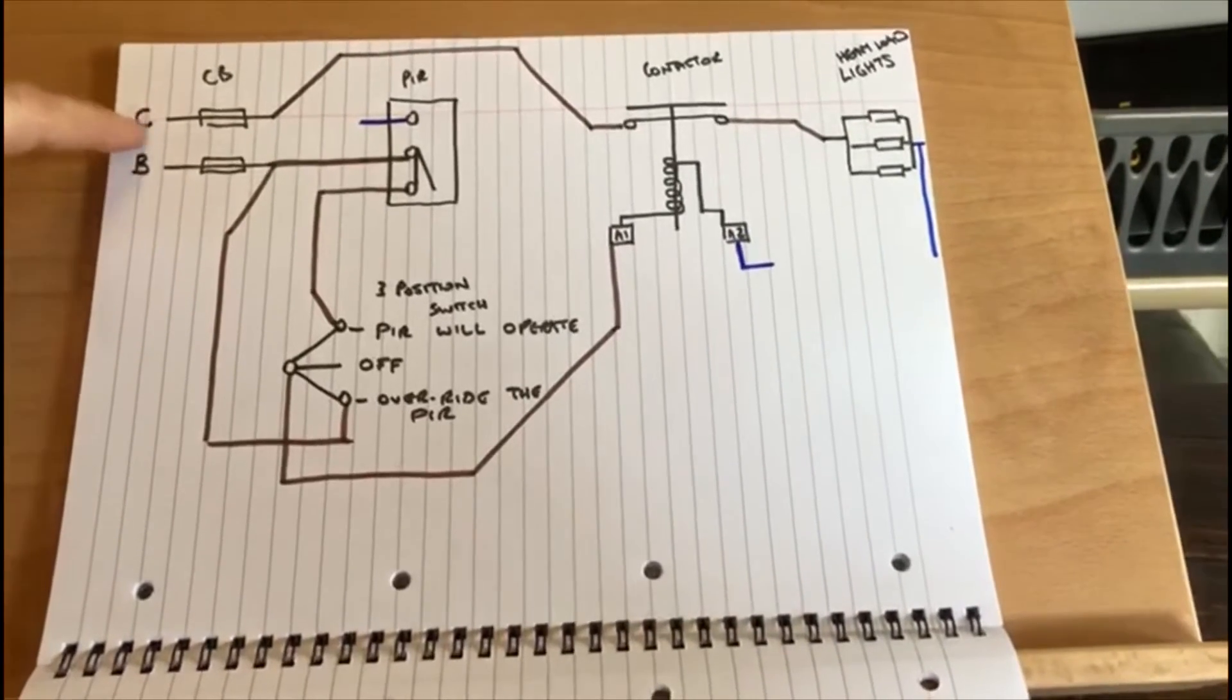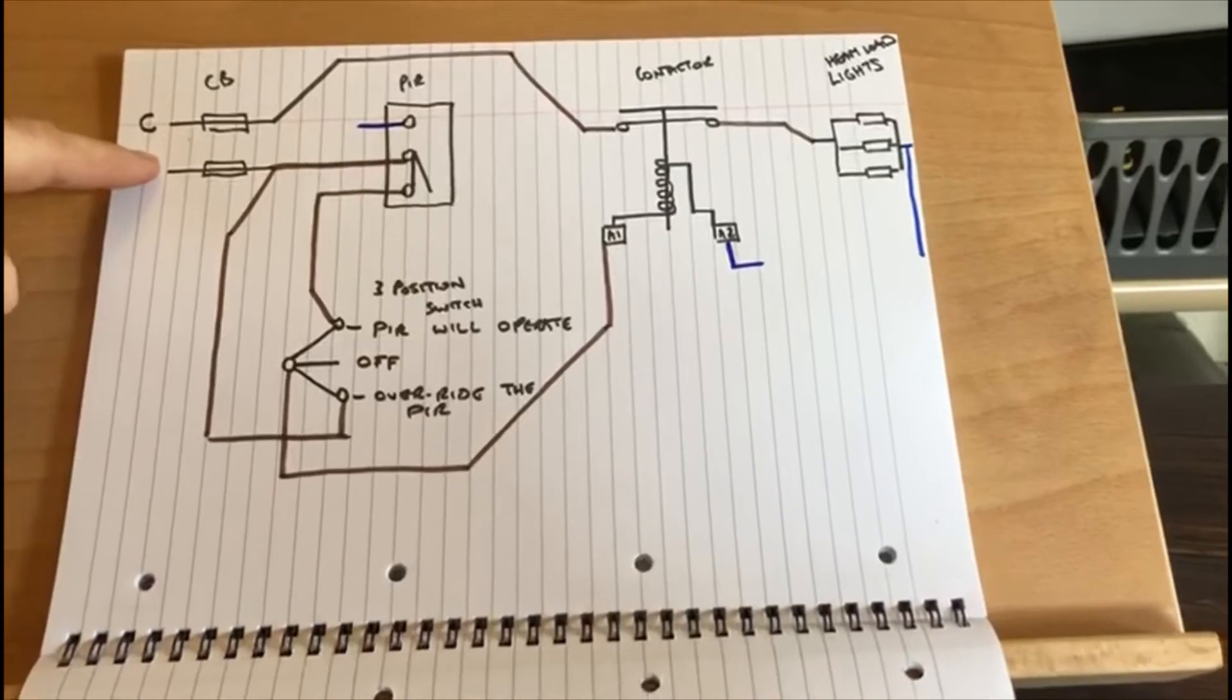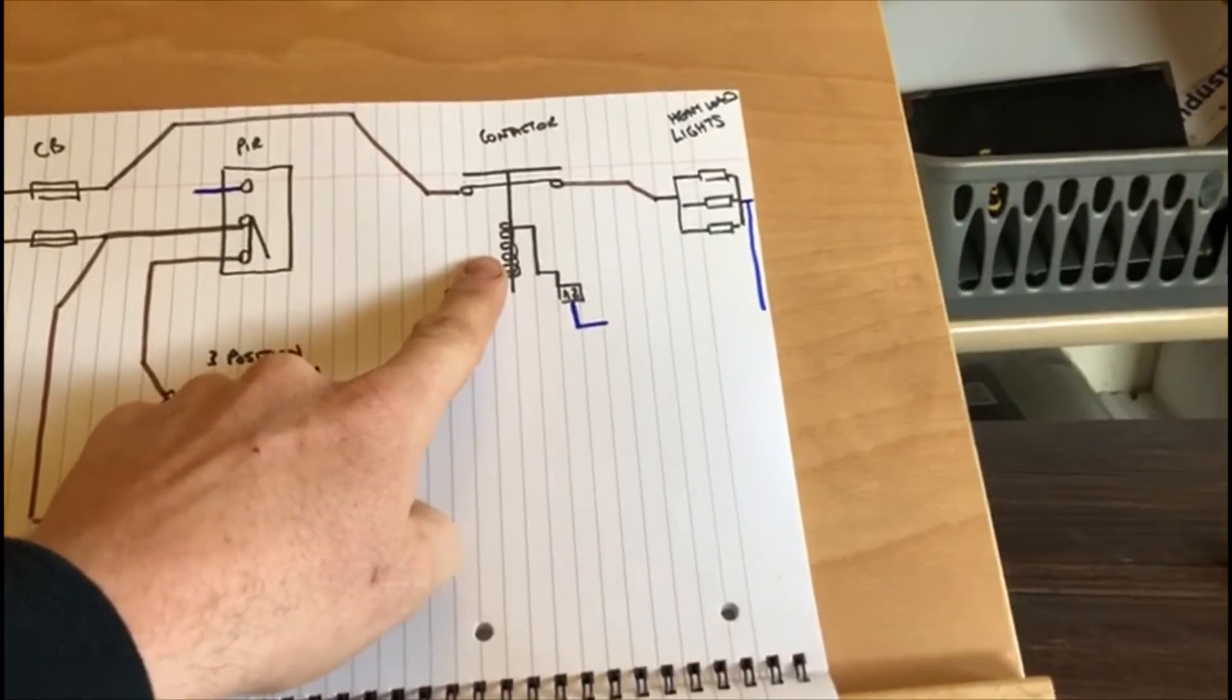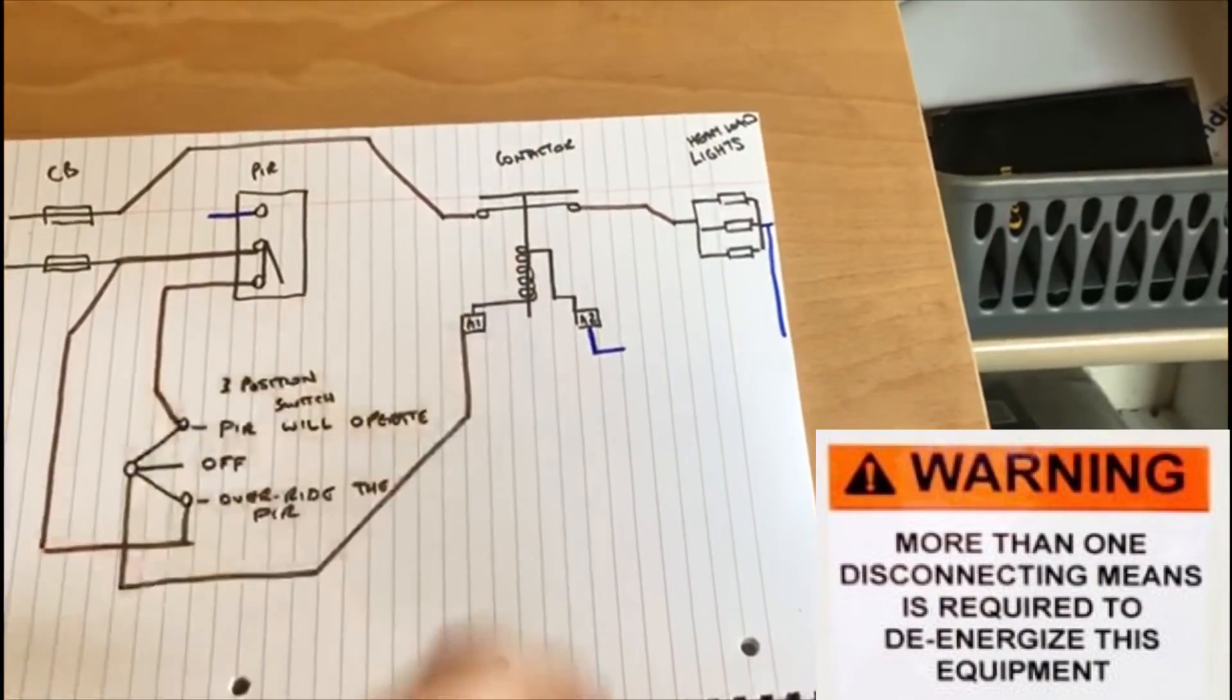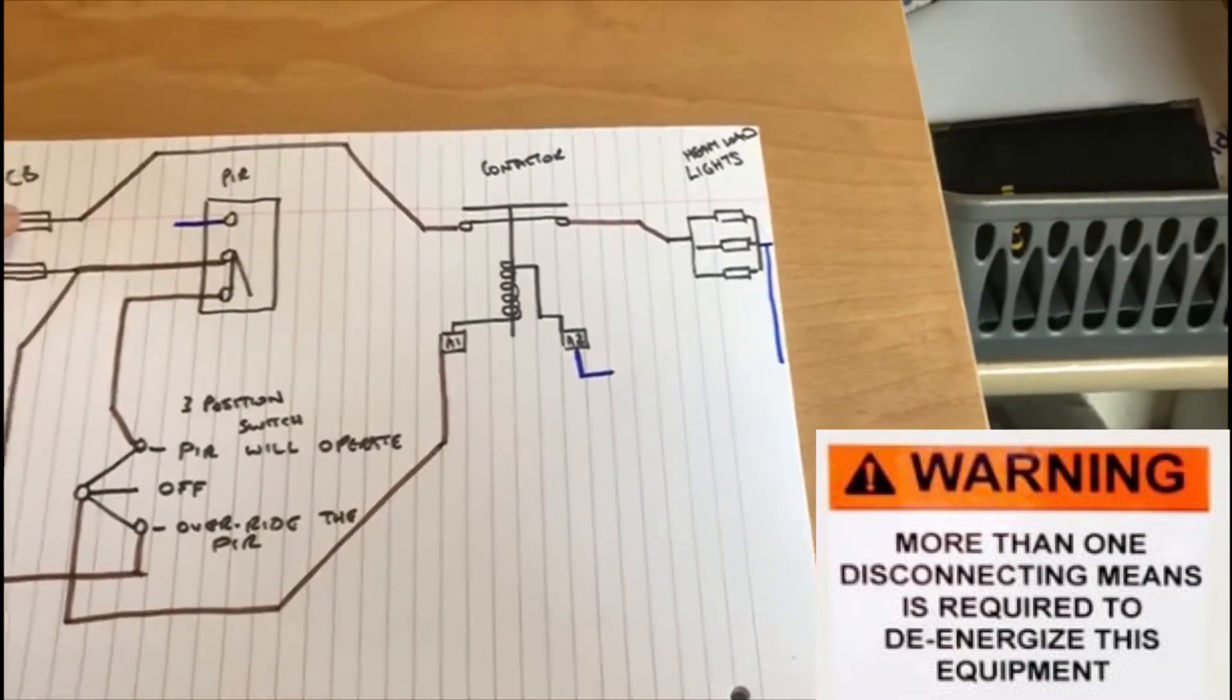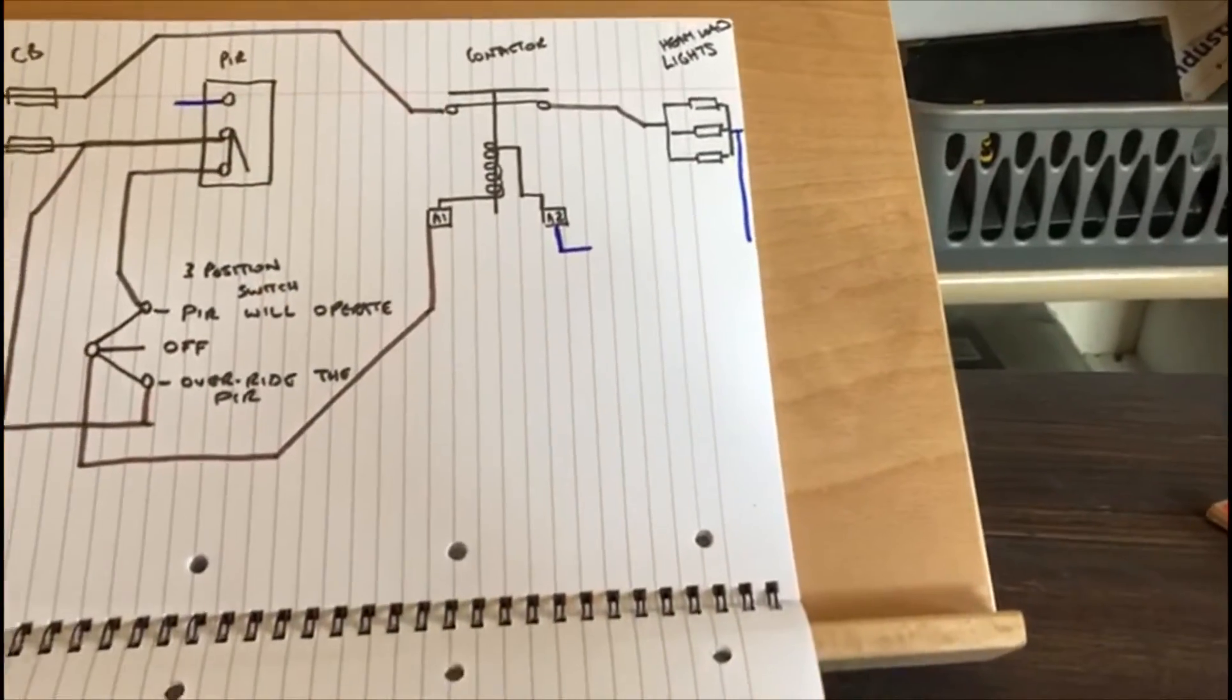Again the contactor, if we're working on the contactor, that's where the contactor needs to be labeled to say that there's two circuits going to the contactor because there's the main circuit from the C type breaker going to it and there's also the circuit going through the mid position switch, the three position switch through the B type circuit breaker.